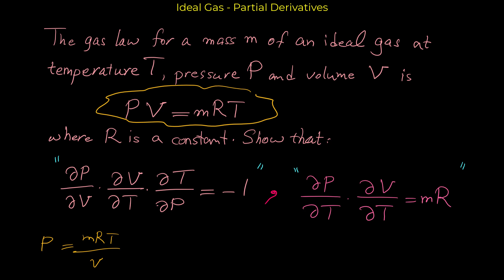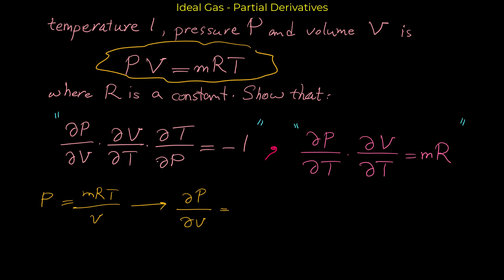When you can find p easily in terms of v, you don't really need implicit differentiation. The partial derivative of p with respect to v, using the quotient rule — derivative of the top times bottom minus derivative of the bottom times top, all over bottom squared. In the numerator we don't have any v, so the derivative of the top is zero. We get: zero minus mRT times one, all over v squared. So the result is negative mRT over v squared.